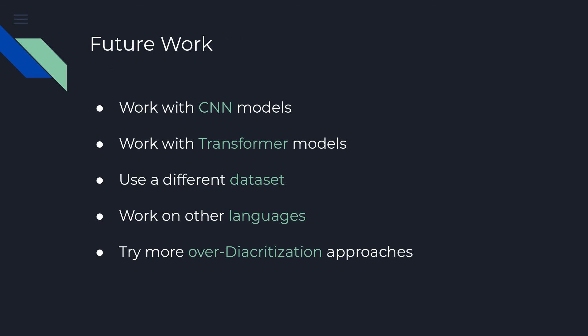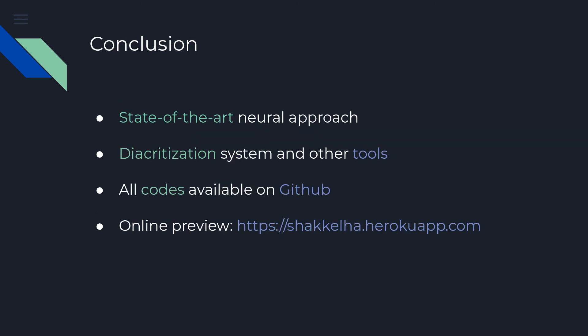Future work will include experimenting with convolutional neural networks and transformers, using different datasets to include modern standard Arabic, possibly working on other languages as this approach is language-independent, and using diacritics to improve other systems such as sentiment analysis and semantic text similarity. To conclude, we presented a strong state-of-the-art approach for Arabic text diacritization while providing tools to train new models and enhance current ones. The large dataset is publicly available on GitHub along with training and testing codes.